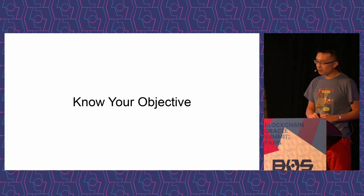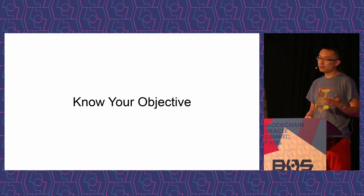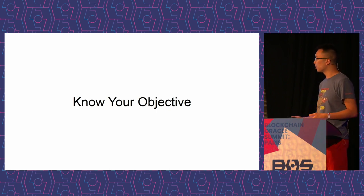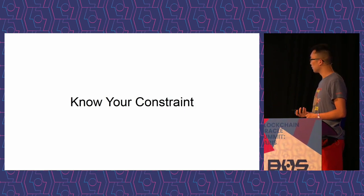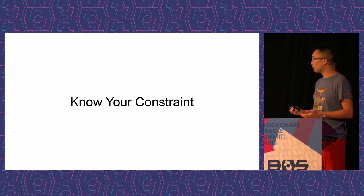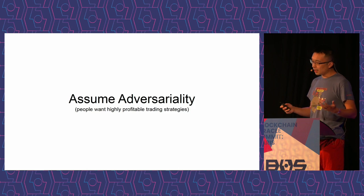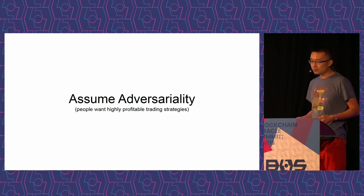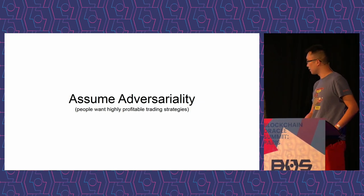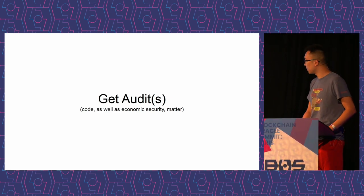How to make better Oracles? You have to know your objective first. Are you securing lending protocols, perpetuals, NFTs, or governance? You're constrained realistically by how much liquidity you can generate or leverage for your protocol or Oracle, and your liveness assumptions. You should always assume that someone is there to execute highly profitable trading strategies to the extent that there is opportunity. And get audits on your code as well as your economic security assumptions.